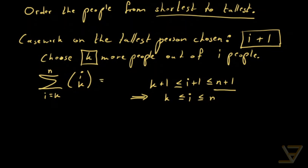And this sum is equal to n plus one choose k plus one. And that is the identity that we wanted to prove, the hockey stick identity.